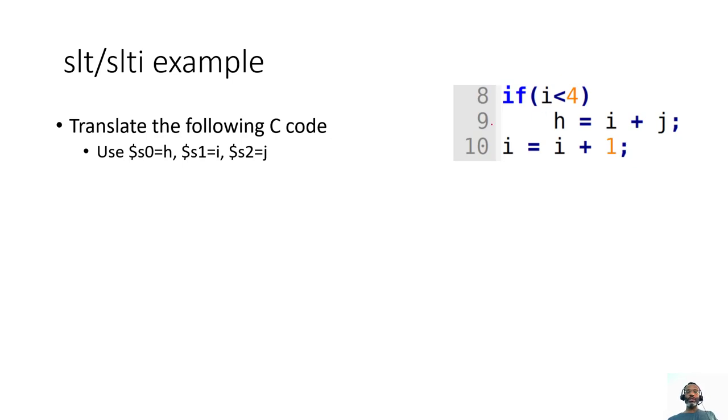So in this case, we're doing a conversion where we're looking at determining whether or not i is less than 4. Right away, since there is an immediate value, if this had been i less than j, then I would have been concerned with using a set on less than. But since we have an immediate value, it looks like a set on less than immediate makes sense.